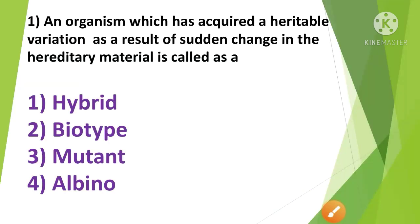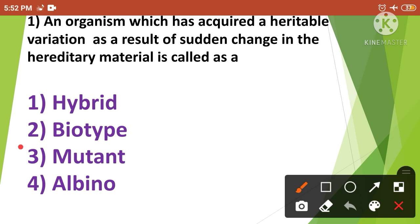Question number 1: An organism which has acquired a heritable variation as a result of sudden change in the hereditary material is called — 1st option hybrid, 2nd option biotype, 3rd option mutant, and 4th option albino. The correct answer is option 3rd, mutant. An organism which has acquired a heritable variation as a result of sudden change in the hereditary material is called a mutant.